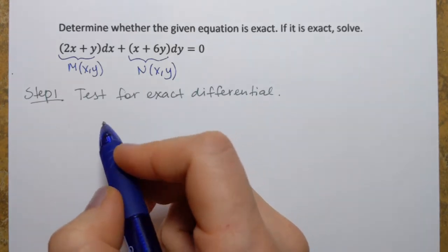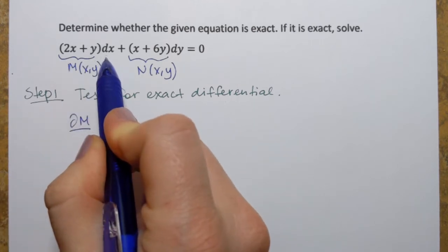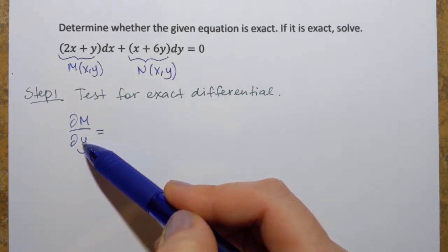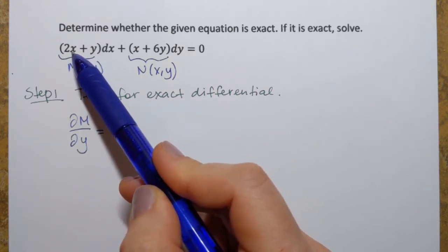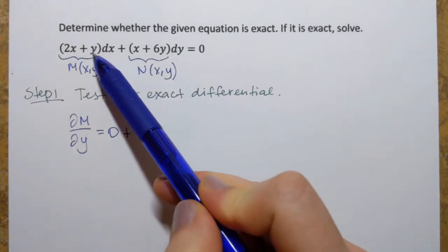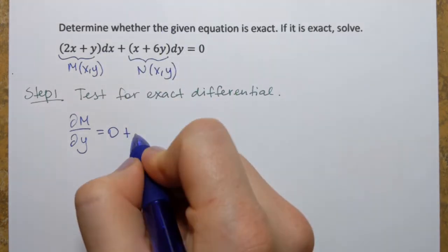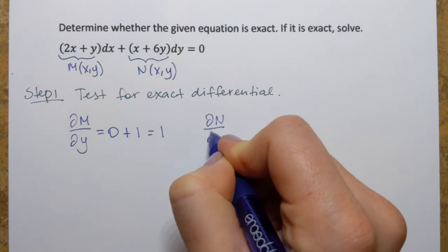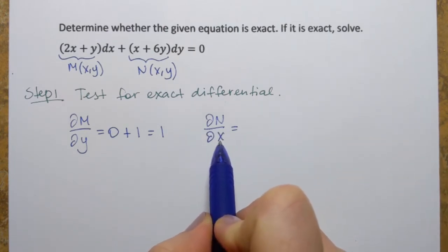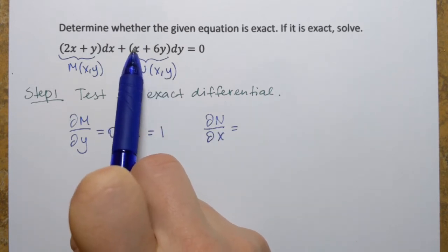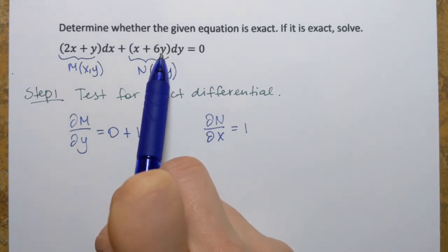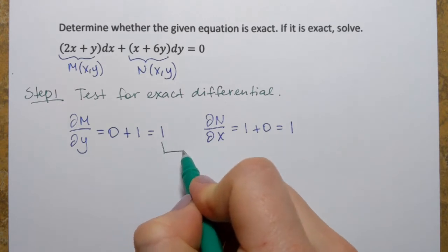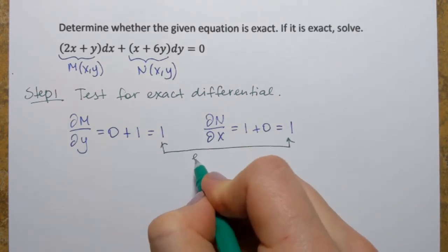So let's do it — that's step one. The partial derivative of function M with respect to y: I'm treating y as the variable and x as the constant. So 2x is the constant, its derivative is zero, plus the derivative of y, which is just one. So I get one. And now the partial derivative of N with respect to x: treating x as the variable and y as the constant. The derivative of x is one, and 6y is a constant so its derivative is zero. I get one. The results are equal.